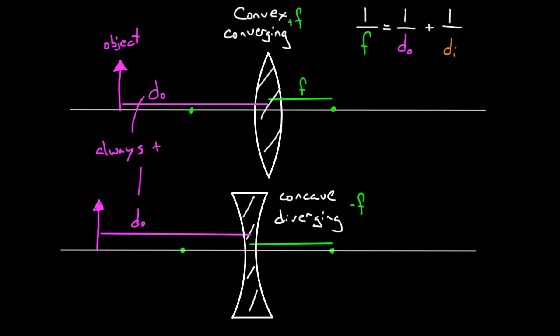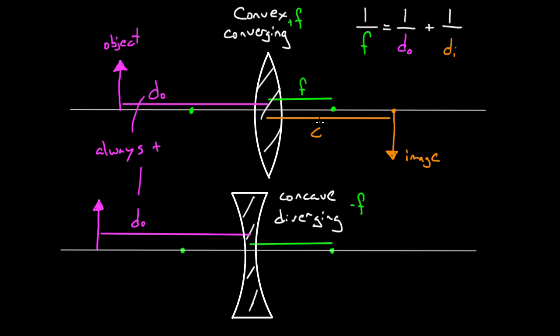Image distance is the tricky one. This refers to the distance from the lens to where the image is, but your image can be on one side or the other. Say for this case I ended up with an image upside down over here — that's my image formed by the object and this converging convex lens. Image distance is defined to be from the center of the lens to where the image is, always measured parallel to the principal axis. You never measure on a diagonal. Image distance will be positive if the image is on the other side of the lens than the object.